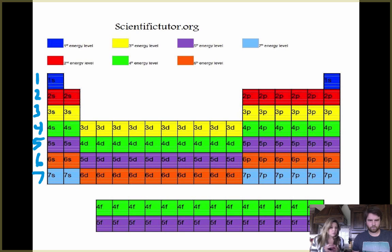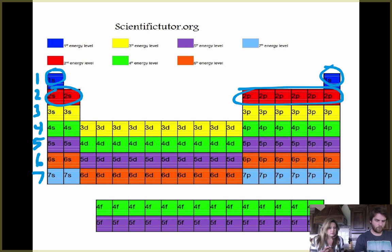So in the first energy level, it's small. You can only have an S orbital, which means you can only have two electrons. The second energy level has an S and a P. So we could hold two, three, four, six. No, eight. Six from the P and two from the S. So we can have eight.